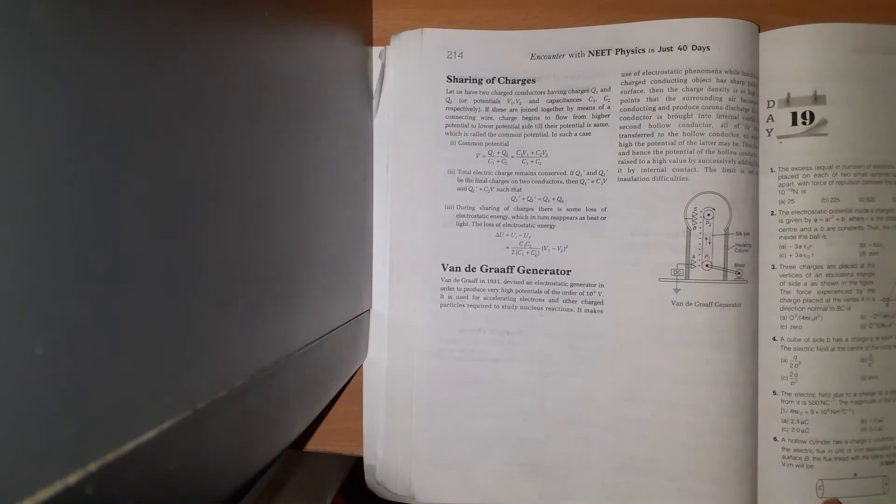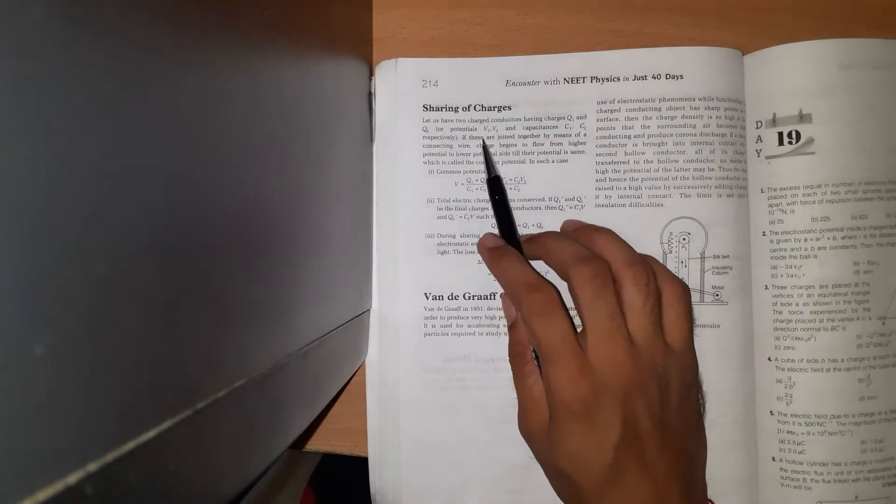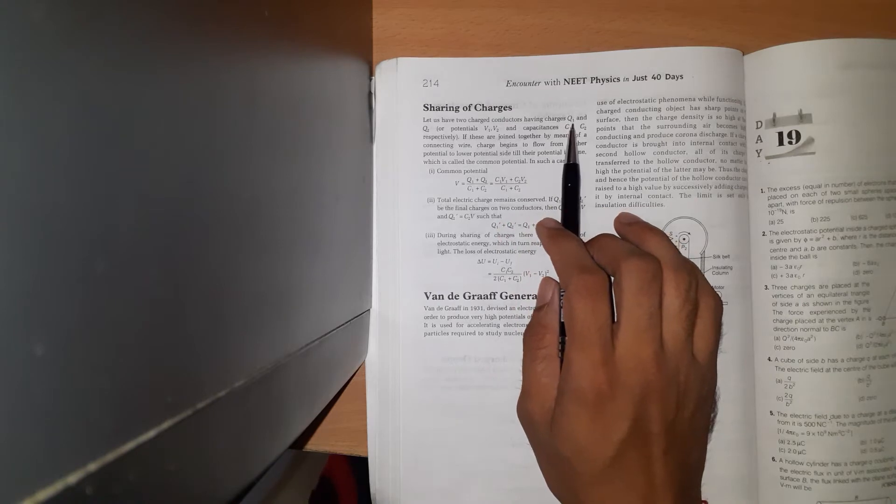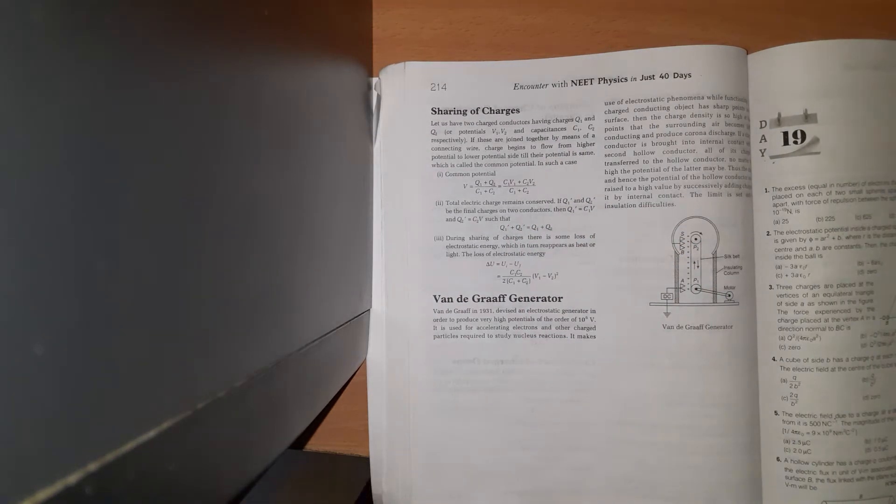The next topic is sharing of charge. Let us have two charged conductors with charges Q1 and Q2. We have two devices, both devices are different, both potentials are different, and both capacitances are different.